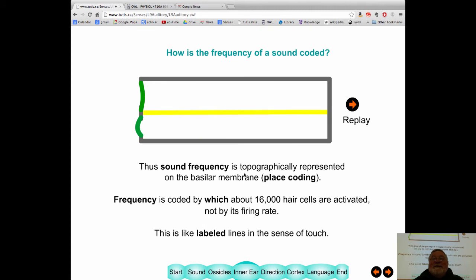So it's like you're being able to detect different textures depending on which afferent is activated on the touch. Here you detect different frequencies depending on which afferent is activated.